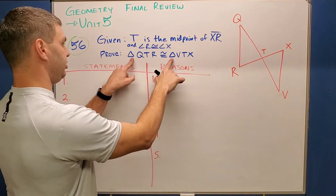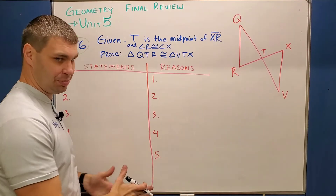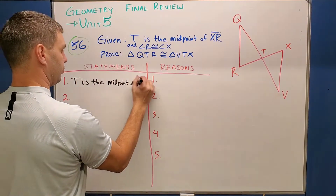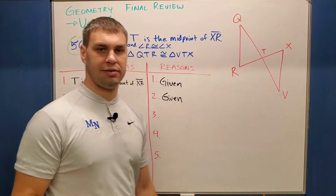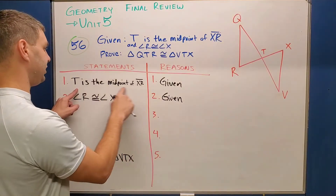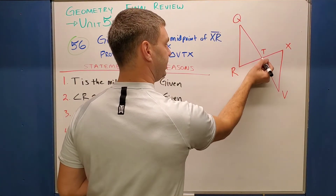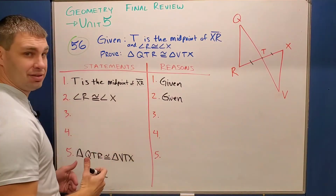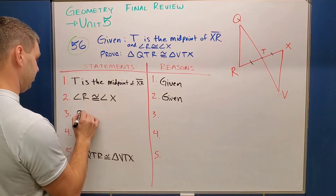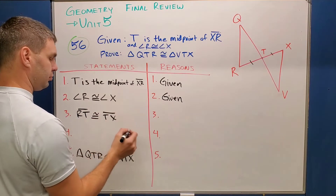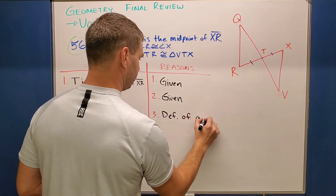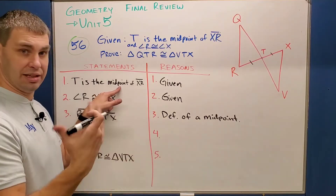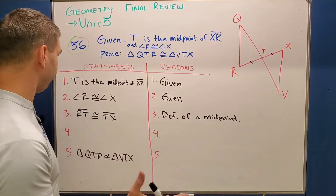The last proof in this video is asking us to prove that these two triangles are congruent to each other — we don't have to do any CPCTC in this one. I'll fill in my givens as well as my proof statement. Now I have to mark up the picture. The first given says T is the midpoint of XR. XR is this line, and if T is the midpoint, that means RT is congruent to TX. So RT is congruent to TX — I write that into the proof and the reason is the definition of a midpoint.